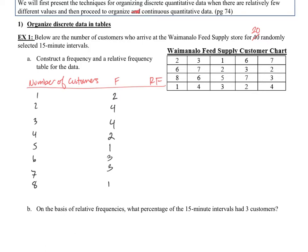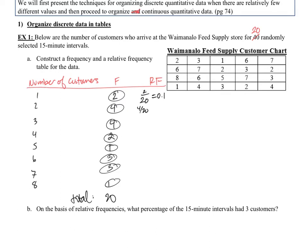Let's count up to calculate relative frequencies by dividing each frequency by the total. Two plus four plus four plus two plus one plus three plus three plus one equals 20 — which matches our original sample size. So the total is 20. For relative frequency, two divided by 20 equals 0.1, four divided by 20, and so on.